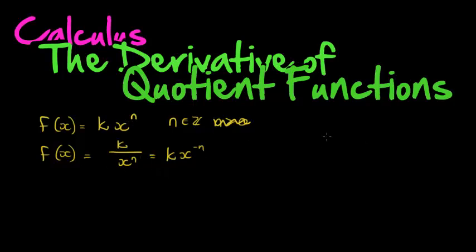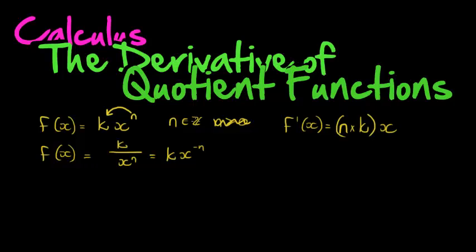But we first need to see what the rule is. The rule for the power function was: to get the derivative, we take the exponent, multiply it with the coefficient — n times k — and then subtract 1 from the exponent, giving x to the power of n minus 1. We want to know if this rule still holds when n is negative.